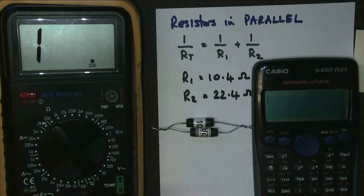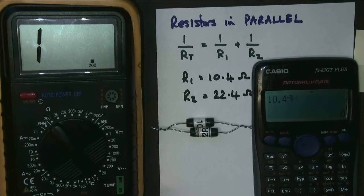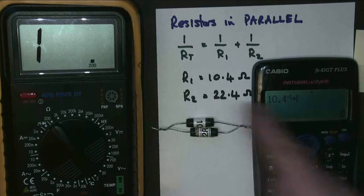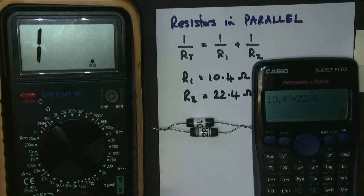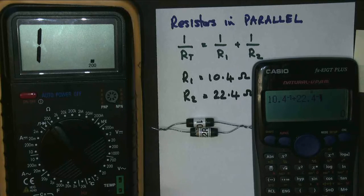And we'll do a little calculation to work out the resistance. So we're going to take the first resistance, 10.4, and use the inverse button just here, 1 over. We're going to add that to the second resistance, 22.4 inverse of. So that's our sum, just there and just there. We're going to see what equals.